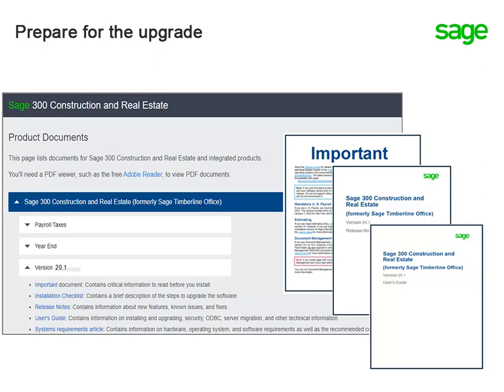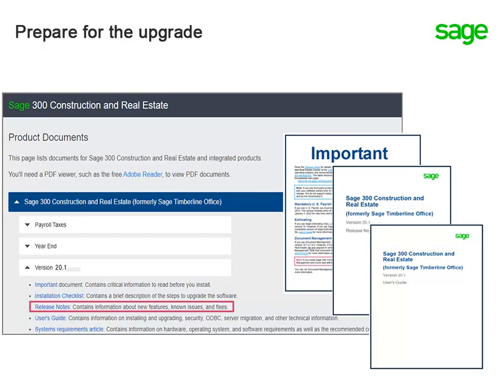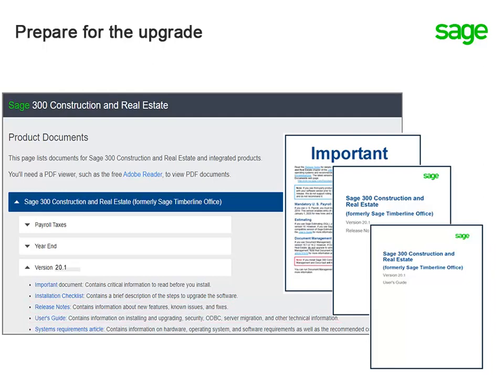You can find several other release documents on the Product Documents page to help you prepare for the upgrade. They include the important document, which contains critical information to consider before you upgrade; an installation checklist; the release notes, which contain a complete list of features and changes starting in version 20.1; the user guide, which contains technical information about upgrading; and a link to the System Requirements Knowledge Base article for a complete list of supported operating systems and other requirements.